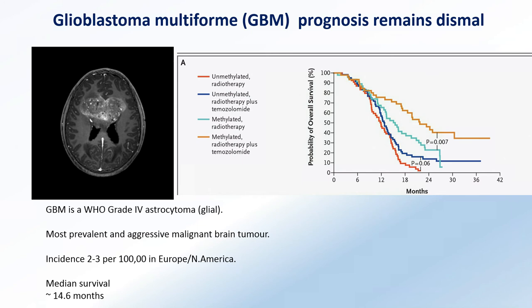The glioblastoma prognosis in more detail: it's a WHO grade four glial tumor, the most prevalent and aggressive malignant brain tumor, with an incidence that's pretty constant worldwide at about two to three per 100,000. This is an MRI image of a very large glioblastoma, and this is typically the stage we see patients. If you look at the survival curve - the orange line represents those patients fit enough to receive very aggressive surgery, then three or four days later an intense six-week course of radiotherapy and chemotherapy. If they have all that multimodal treatment, the median survival is about 14 months. So essentially none of these treatments are effective in any meaningful way.